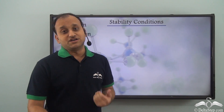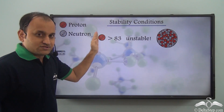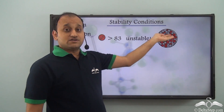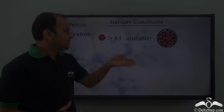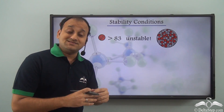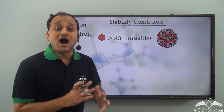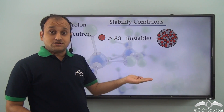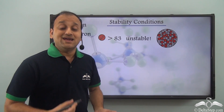So let's understand what the different conditions for instability are. A major condition is that if the number of protons is larger than 83, in that case the nucleus will be unstable. So why 83? Because it has been calculated that once the number of protons is more than 83, the repulsive forces between protons become larger than the nuclear binding forces, and thus the nucleus becomes unstable. Whenever atomic number is more than 83, that nucleus will be unstable.